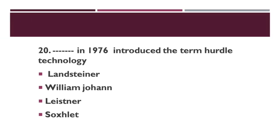Who introduced the term hurdle technology in 1976? Option A: Lance Tener. Option B: William Johan. Option C: Leistner. Option D: Socks let. Correct answer: Leistner introduced hurdle technology in 1976.